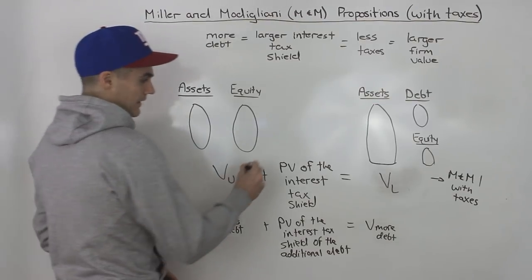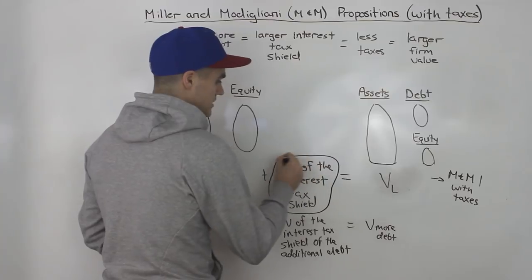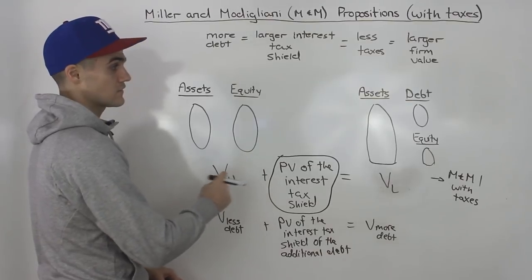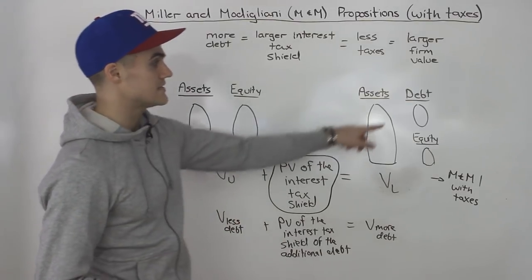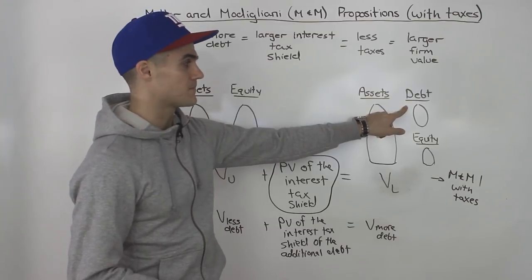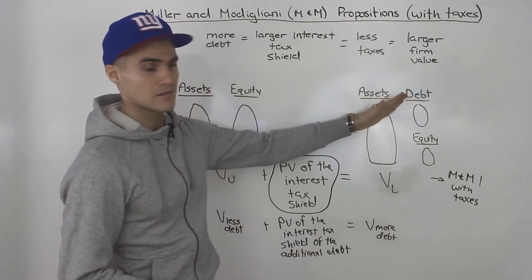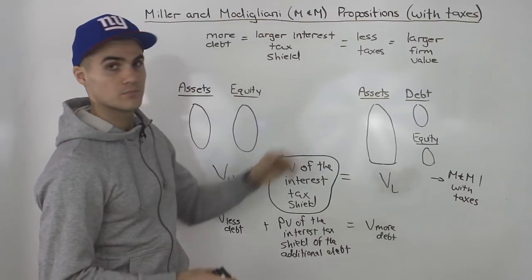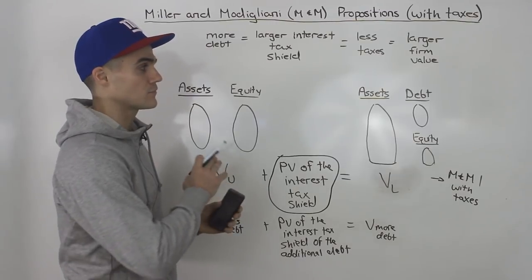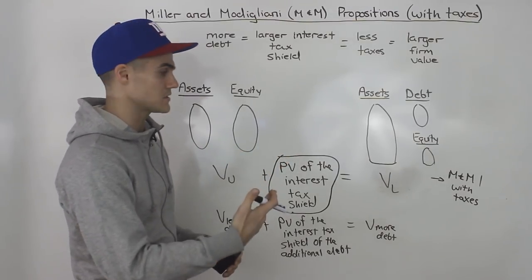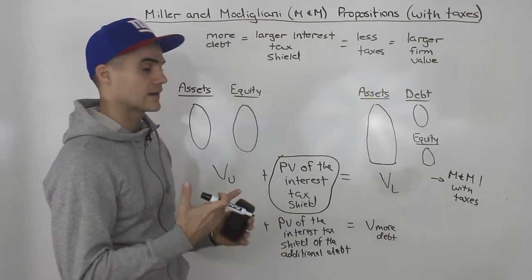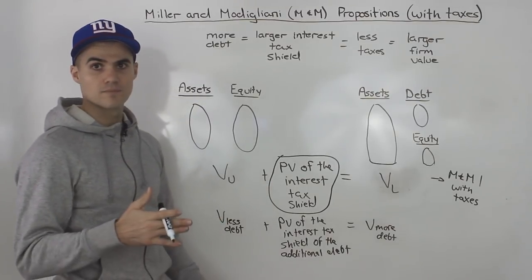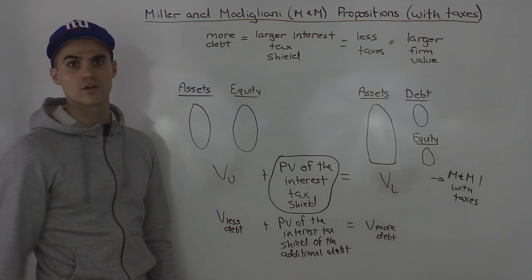In the next part, I'm going to go into a lot more detail calculating what the present value of this interest tax shield actually is. This debt can take on different forms — it can be temporary debt that's paid down over a few years, or permanent debt where the firm keeps it forever and just makes interest payments. Depending on what kind of debt you're dealing with, the calculation for the interest tax shield is going to differ, so we'll cover that in more detail in part two.